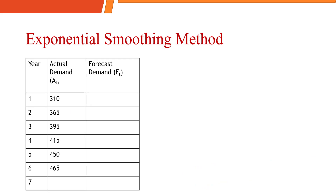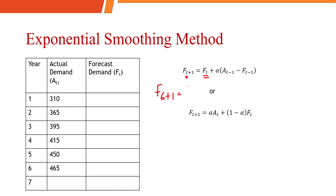In order to do this calculation, we need a formula. We have two formulas — either you can use the first formula or the second formula. In the first formula, we take the forecasted demand of the previous year. When we have the 6th period, we need to calculate the demand for the 7th year, which equals the forecasted demand of the 6th period plus alpha (0.4) multiplied by the actual demand of the 6th period minus the forecasted demand of the 6th period.